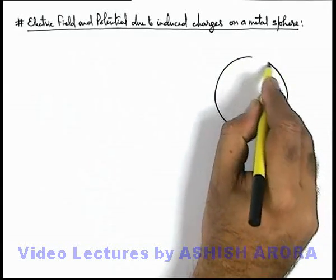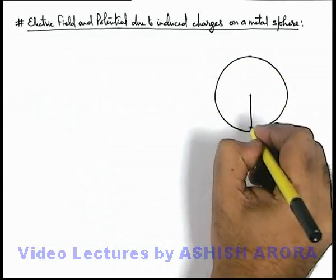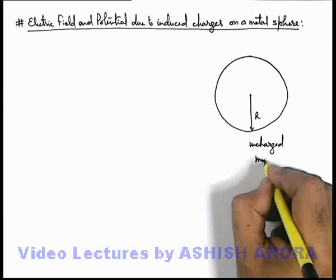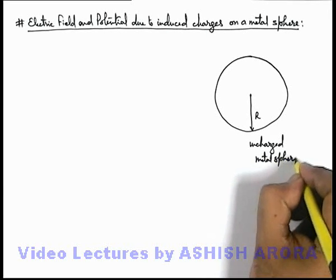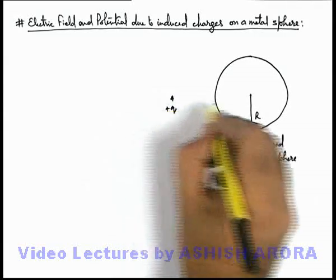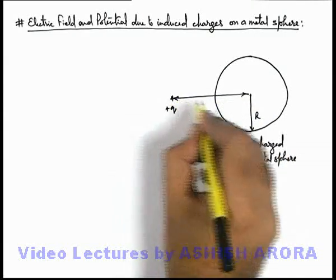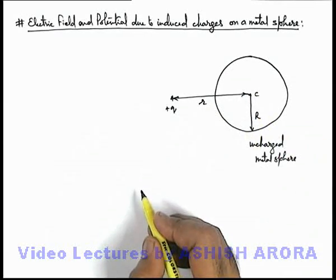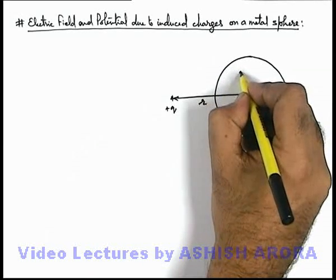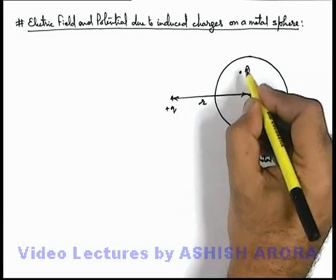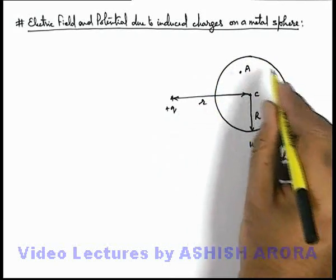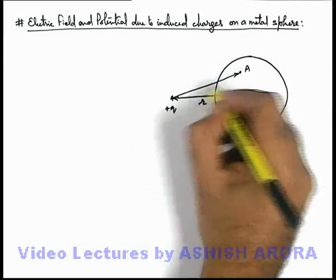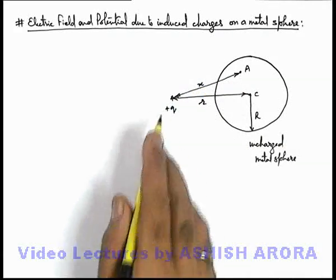Say we are given a metal sphere of radius r, and it is uncharged. In front of this sphere, we place a charge +q which is located at a distance from the centre of this sphere, which is say point c. We are required to find the electric field and electric potential at point a due to the induced charges on the surface of this sphere due to +q. We are also given that the location of point a is at a distance x from the point charge q.